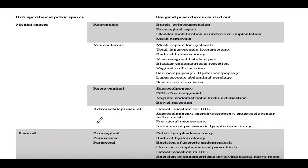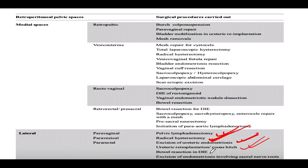Lateral spaces are used for pelvic lymphadenectomy, radical hysterectomy, excision of ureteric endometriosis during ureteric tunnel dissection, ureteric reimplantation after injury, bowel resection for deep infiltrating endometriosis, and excision of endometriotic involvement of the sacral nerve. These are the pelvic spaces we must keep in mind during surgery.